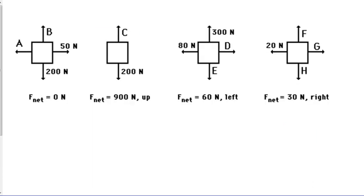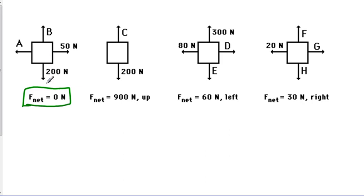Here are some examples of other free body diagrams. They are boxes that you draw, and as you read a problem you apply vectors to them. From those vectors, you can figure out the net force — the total force acting on the object. In the first example, we have a gravitational vector of 200 newtons and an applied vector of 50 newtons to the right, yet our net force is 0 newtons. This tells us we have opposing forces equal to the ones already given.